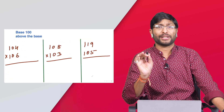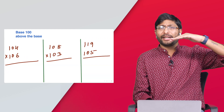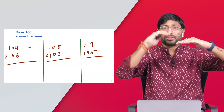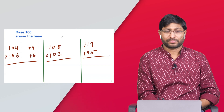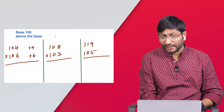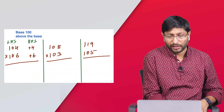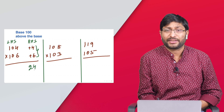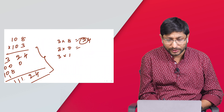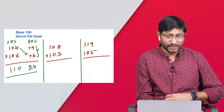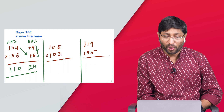Now let me explain the concept in a much simpler way using Vedic maths. For 104 × 106: the base is 100. Since 104 is above 100, the difference is +4; and 106 is above 100, so the difference is +6. Consider a right-hand side and a left-hand side. Right-hand side: 4 × 6 = 24. Left-hand side: cross addition — 104 + 6 = 110. So the answer is 11024.